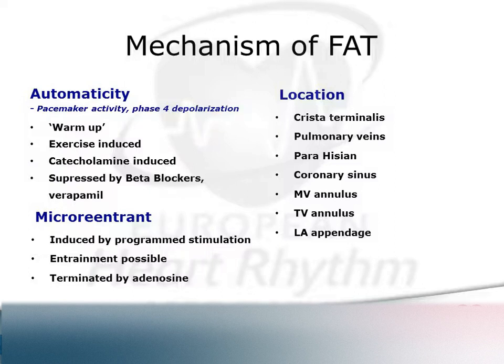The two commonest anatomical locations are probably the crista terminalis in the right atrium and the pulmonary veins. But focal atrial tachycardias can emerge from pretty much anywhere else: around the bundle of His, the coronary sinus, the mitral valve annulus, and we'll cover some of those today.